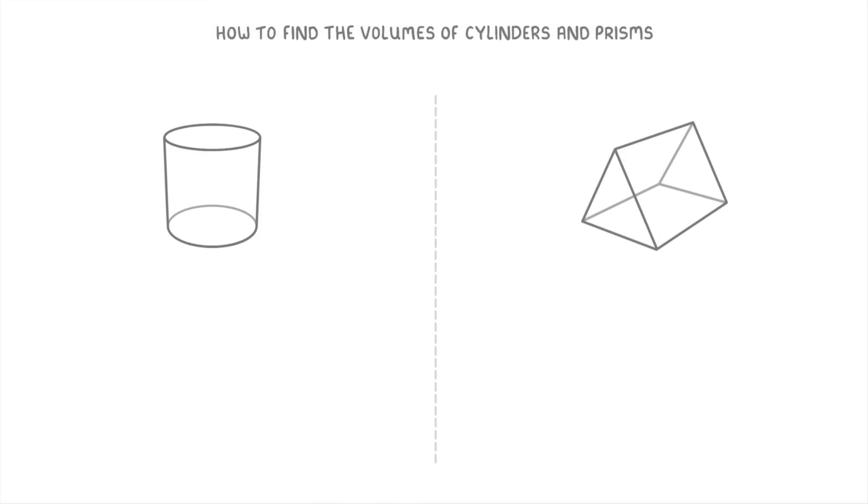In this video, we're going to cover how to find the volumes of cylinders and prisms. Now, the important thing to notice with these shapes is that they have a constant cross-sectional area along their entire length.